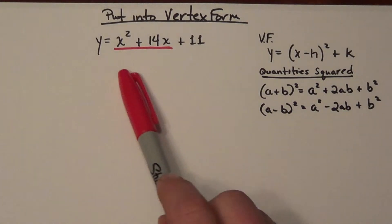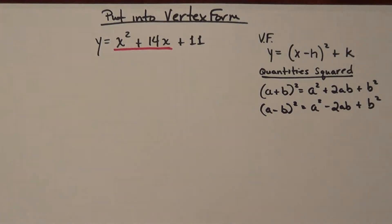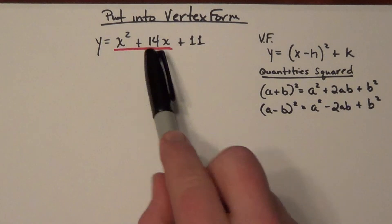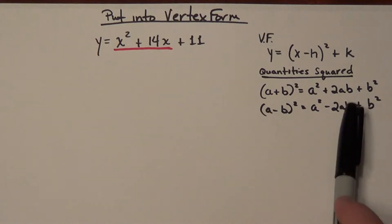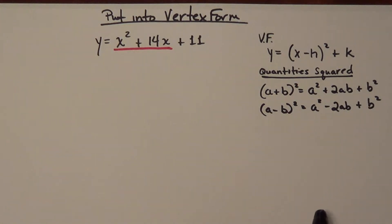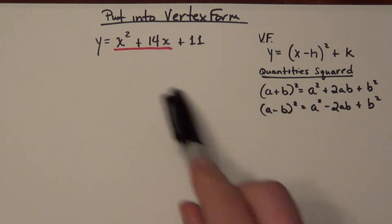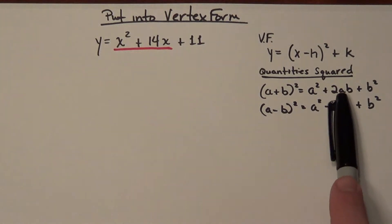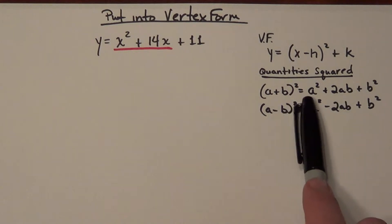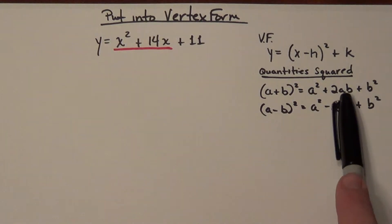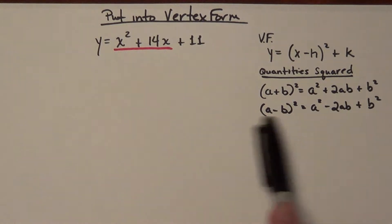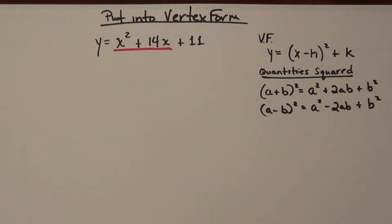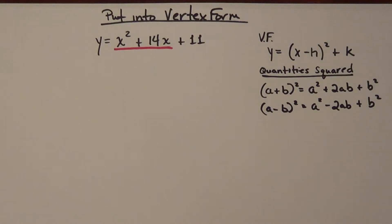What I have here is x squared plus 14x, and these are essentially the first two parts of the a squared plus 2ab plus b squared form. So x squared is my a squared, and 14x is my 2ab. Well, if a squared is x squared, then a must be x. So that implies that 14 must be this 2b. Now I need to find out what b squared is.